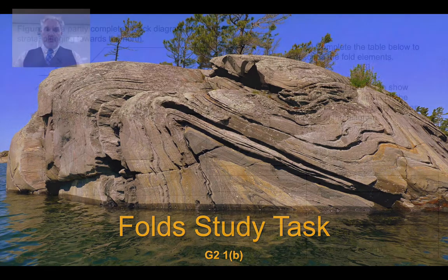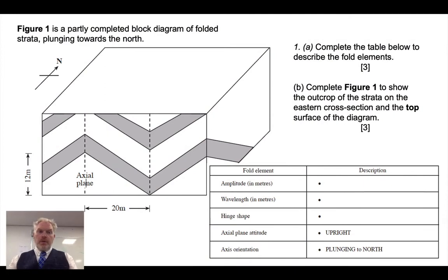Okay, let's have a look at the questions. We've got a partially completed block diagram of folded beds and we're told it's plunging towards the north. The first job we need to do is to complete that table to describe the different elements of that fold. A fairly straightforward exercise, but one you just need to be a little bit careful with, particularly in terms of the measurements.